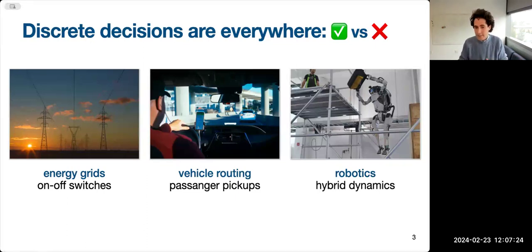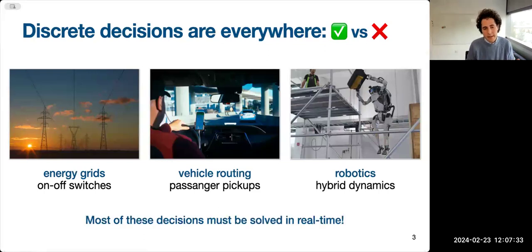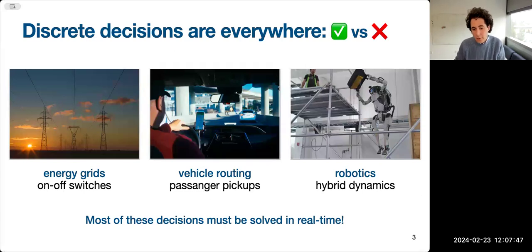Whenever you have a robotic problem and the robot walks, touches the ground, or grabs an object, the dynamics completely change — they're called hybrid dynamics — and this causes discrete decisions you need to address to control the robots. In all these applications, when you have discrete decisions, they're notoriously more challenging. These decisions must be addressed in real time — within strict time requirements that could be minutes, seconds, or even milliseconds for robotics.